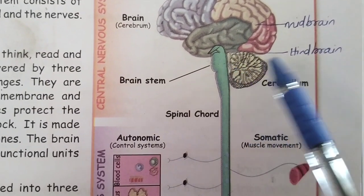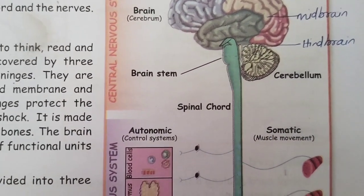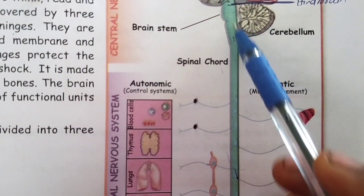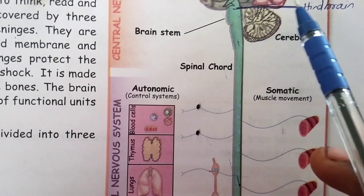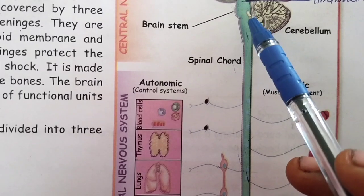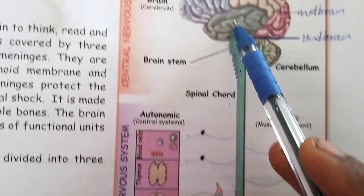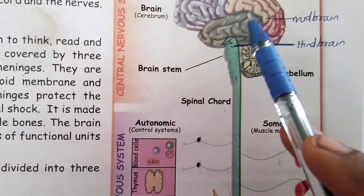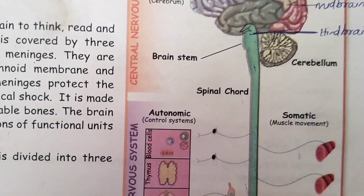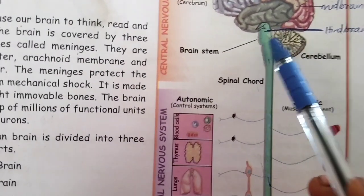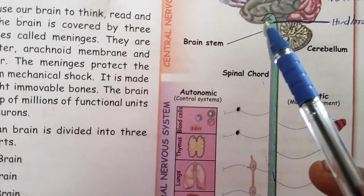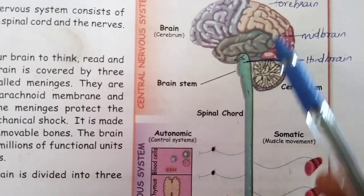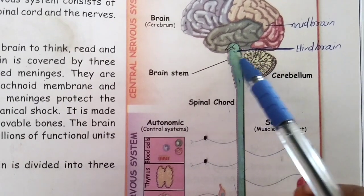The next part of the brain is the hindbrain. It consists of pons and medulla oblongata. The hindbrain is called the brain stem because it looks like a stem. It connects the brain with the spinal cord, which is a long tube-like structure extending from the brain along the backbone. The hindbrain controls heartbeat and breathing rate.